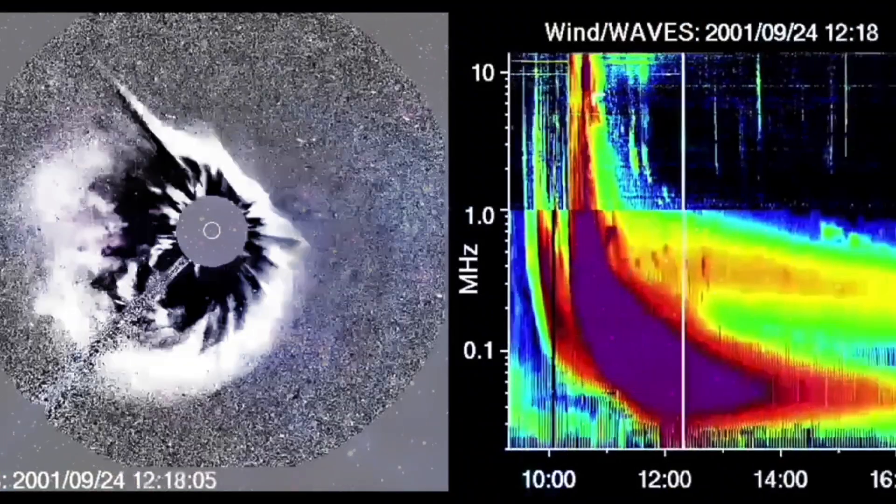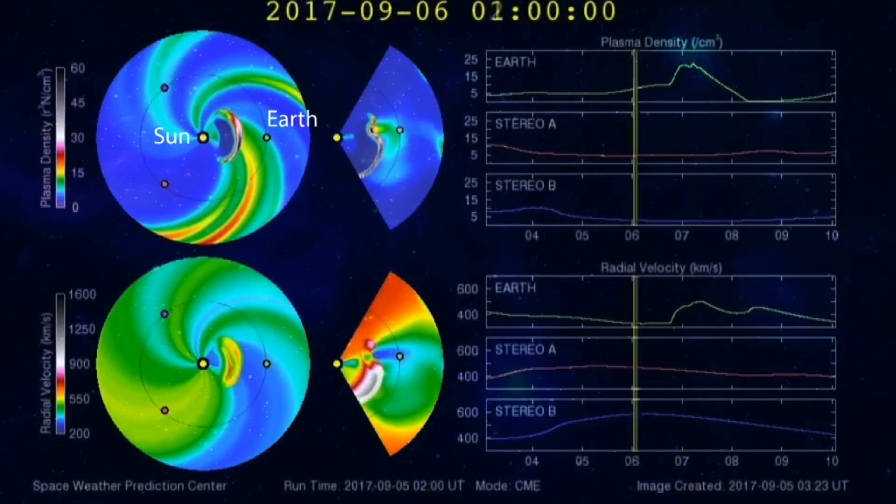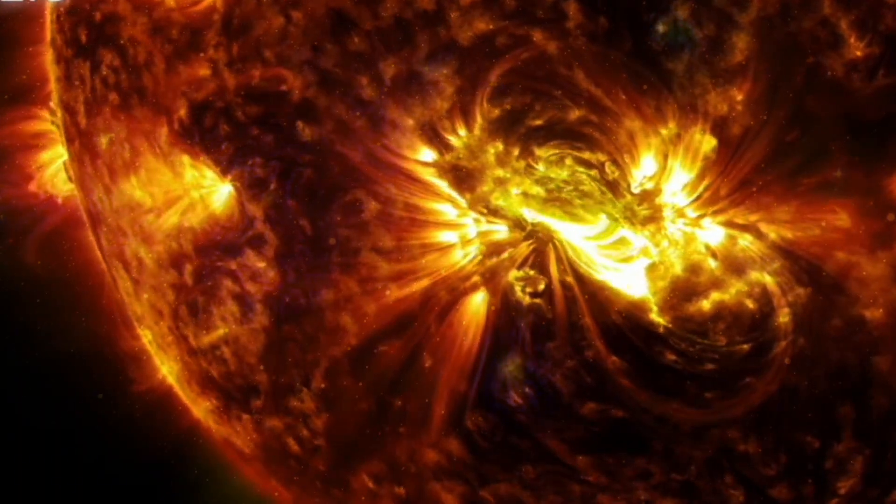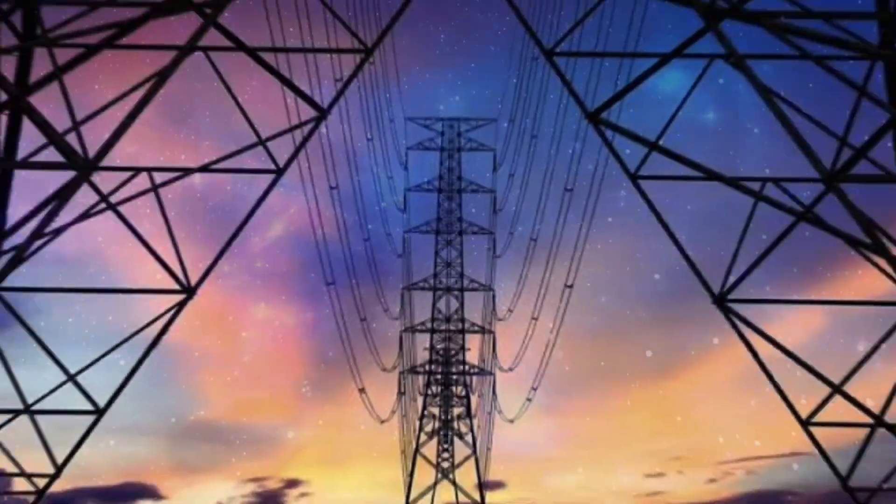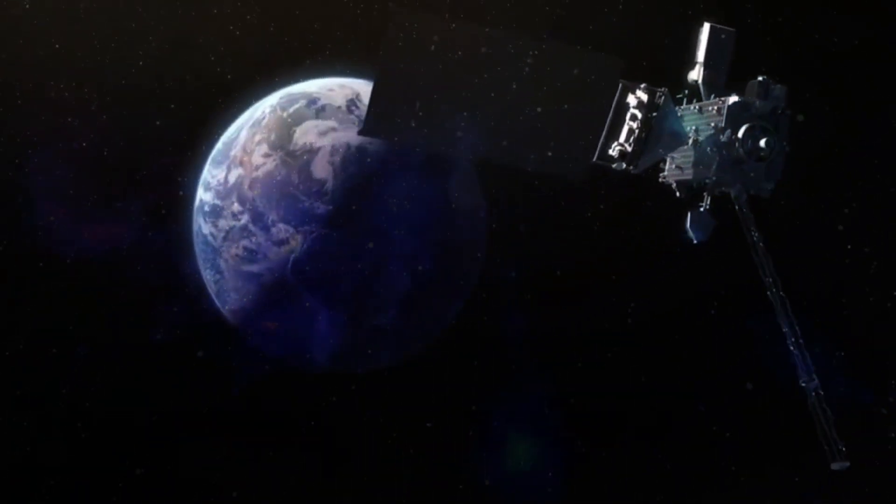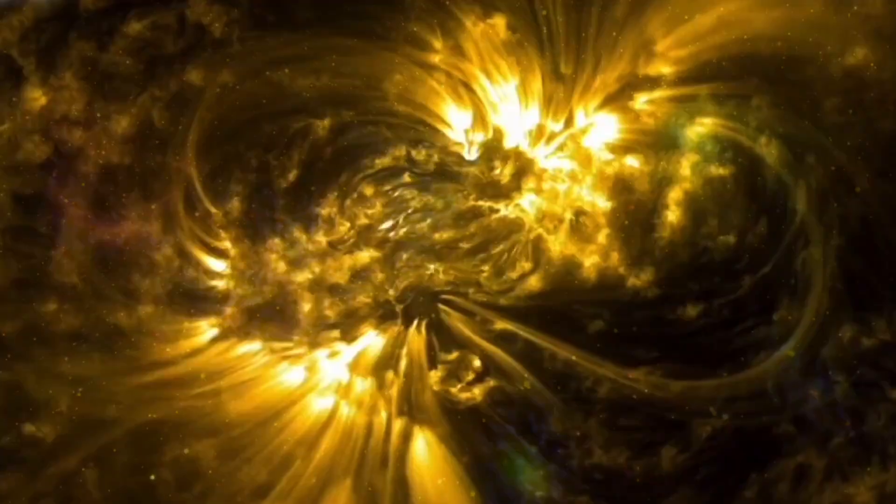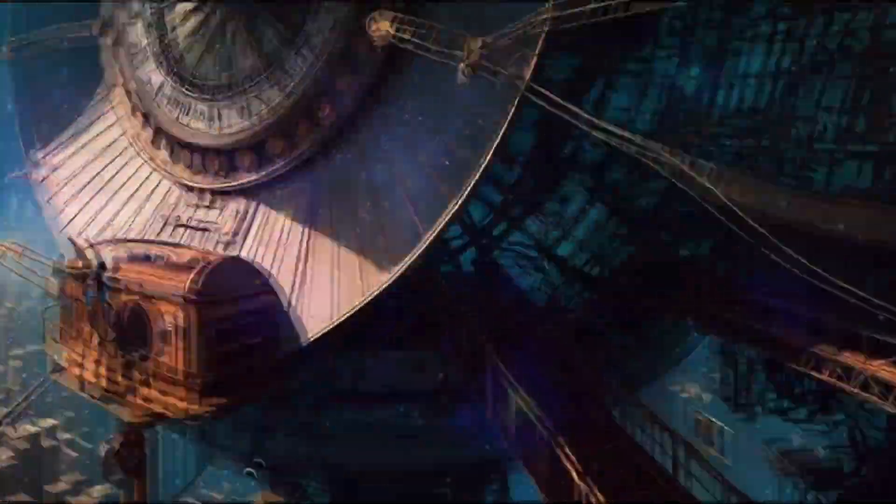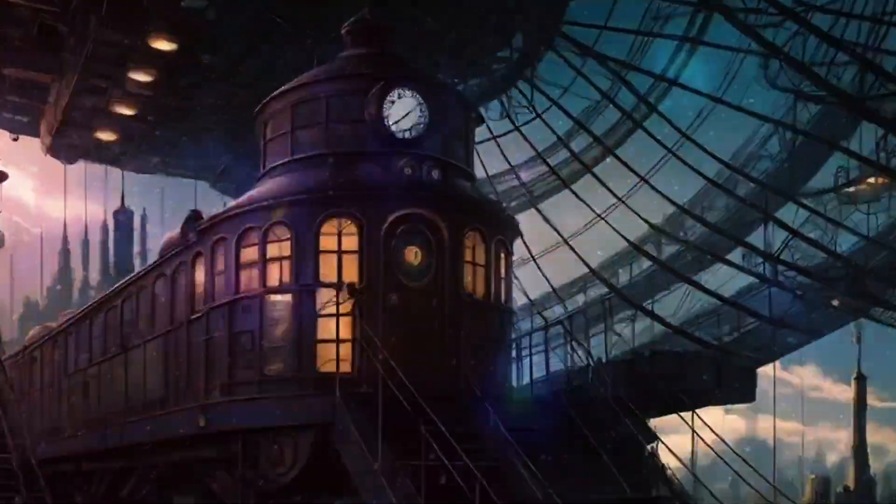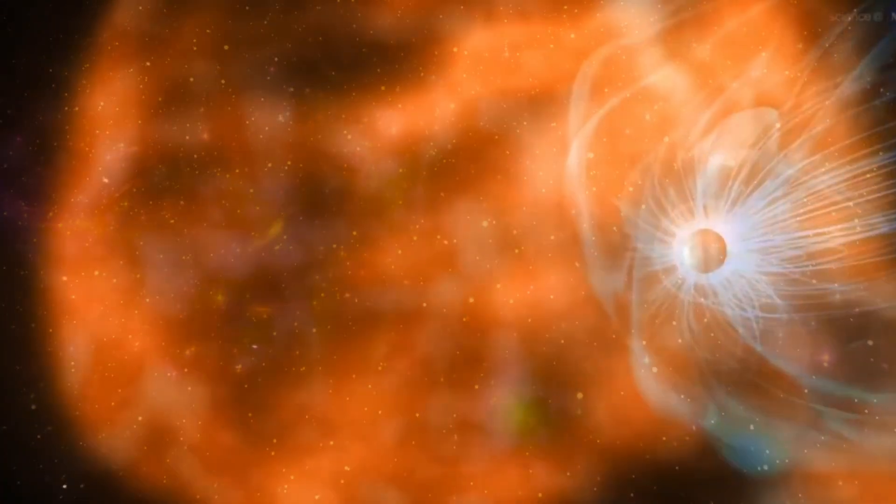Imagine having a measuring tape for solar storms. That's essentially what the NOAA space weather scales are, developed by the National Oceanic and Atmospheric Administration. This scale ranks solar storms from 1 to 5, with 1 being a minor event and 5 being extreme. It's a bit like categorizing tornadoes or hurricanes. They look at how these storms could affect our power systems, satellites, and other tech.